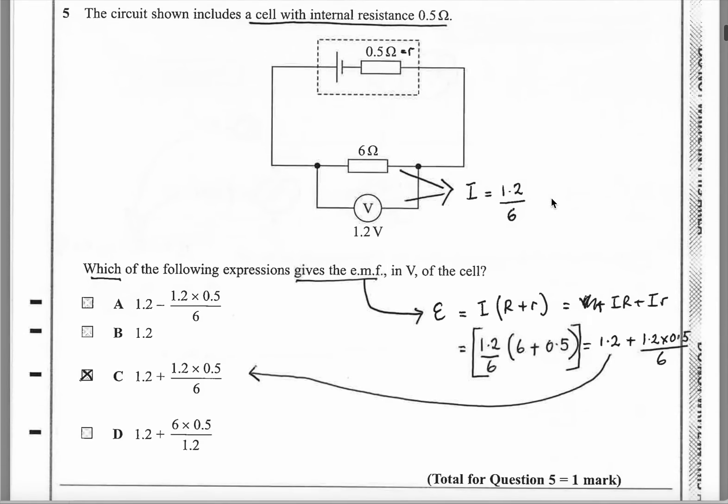Question 5, another question with internal resistance. Circuit shows a cell with internal resistance of 0.5 ohms, which I've called little r. Externally, there's a 6 ohm resistor, and we know that it's got 1.2 volts across it. So we can work out what the current is. I immediately write down an expression for voltage divided by current. If the current is this much, it will be the same through there. They want you to find an expression that gives EMF in volts of the cell.